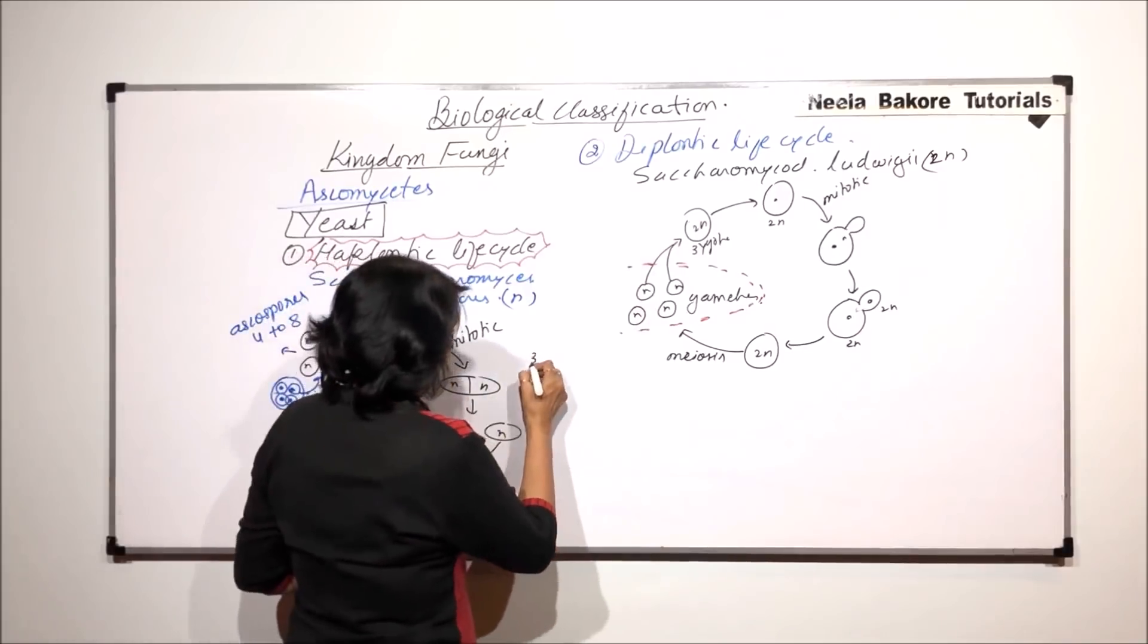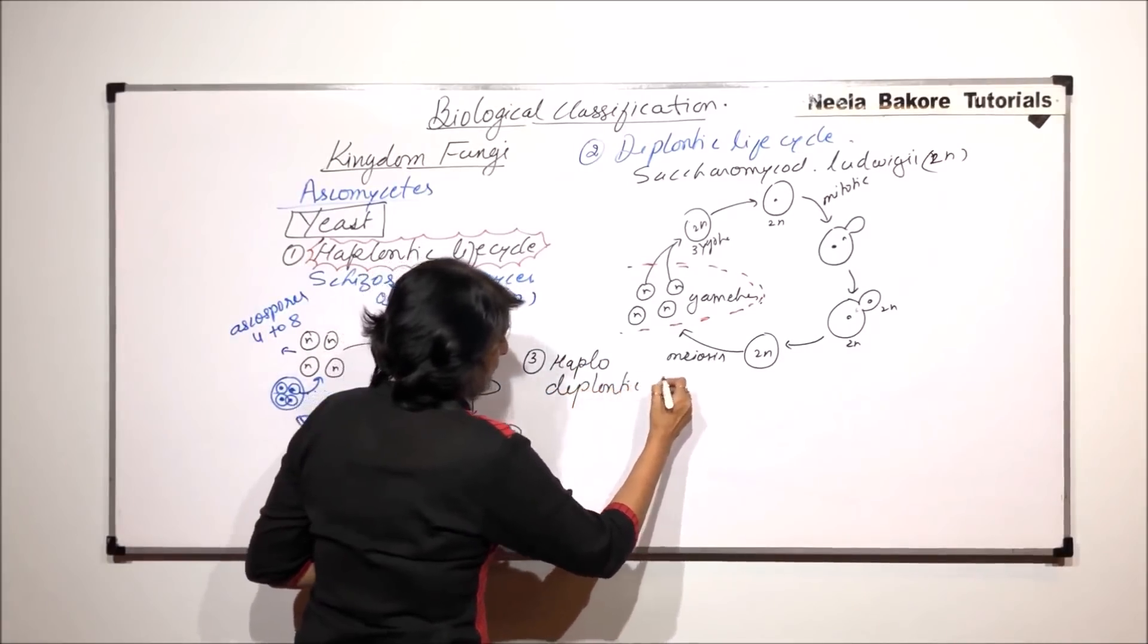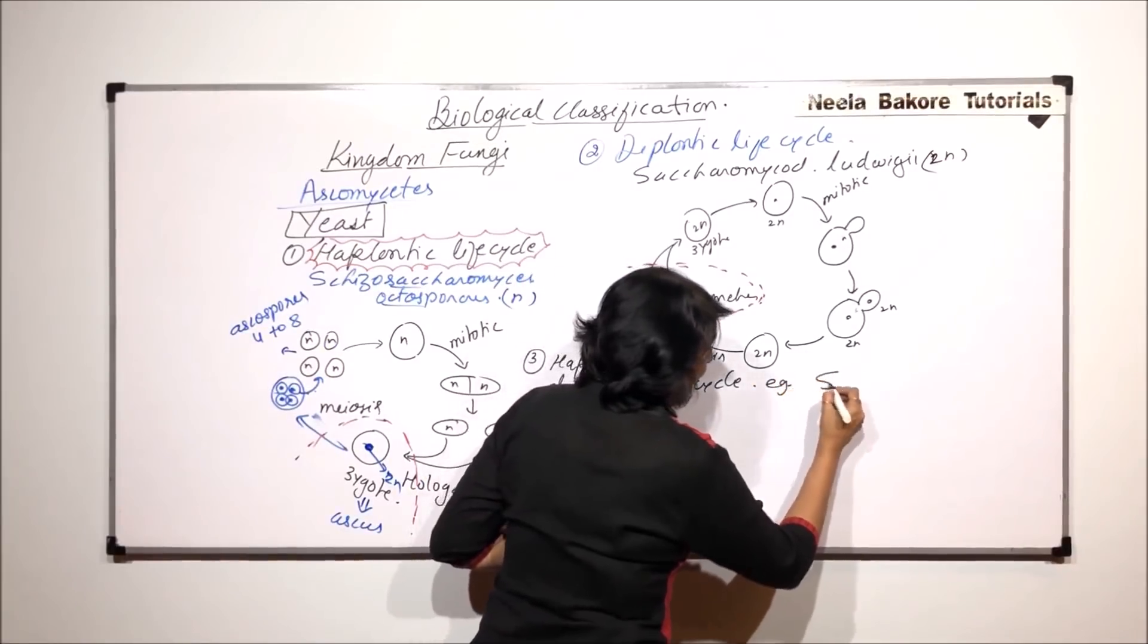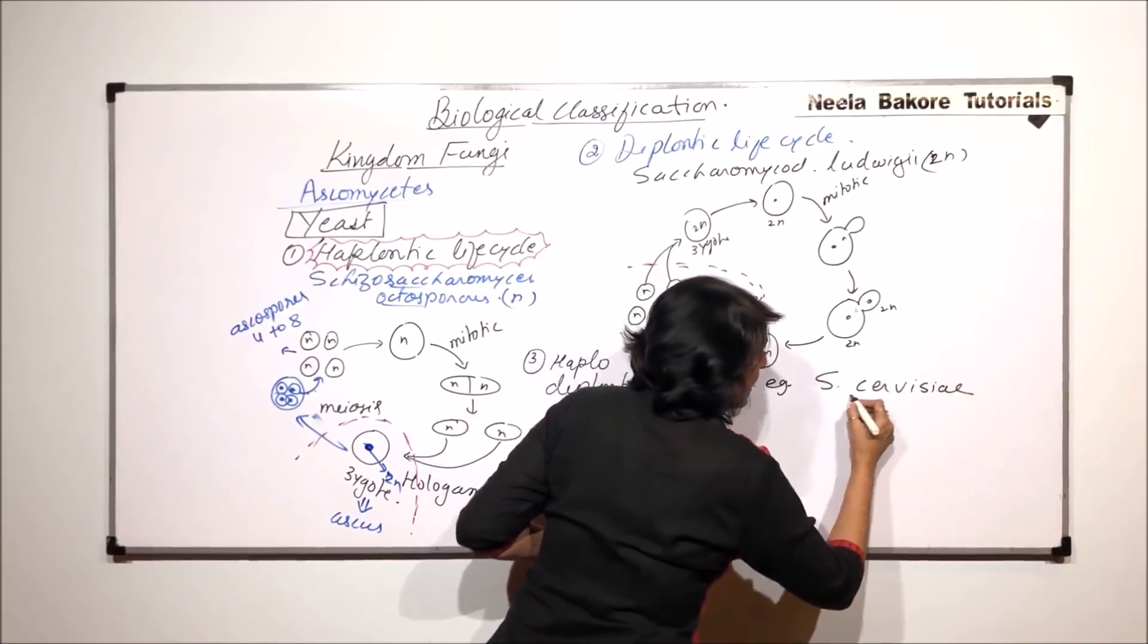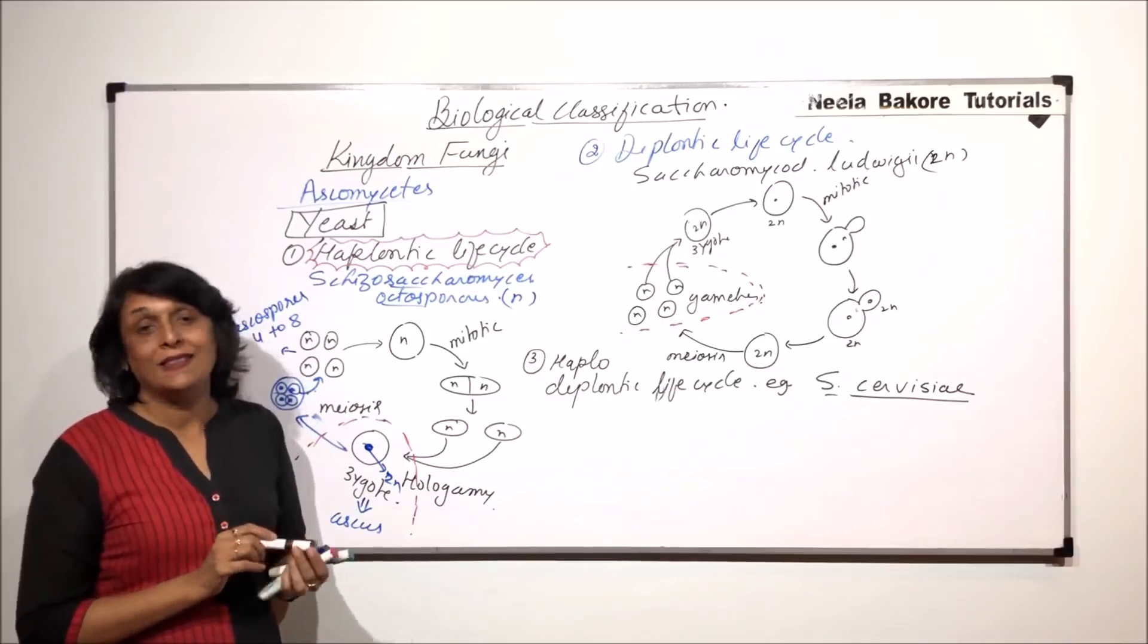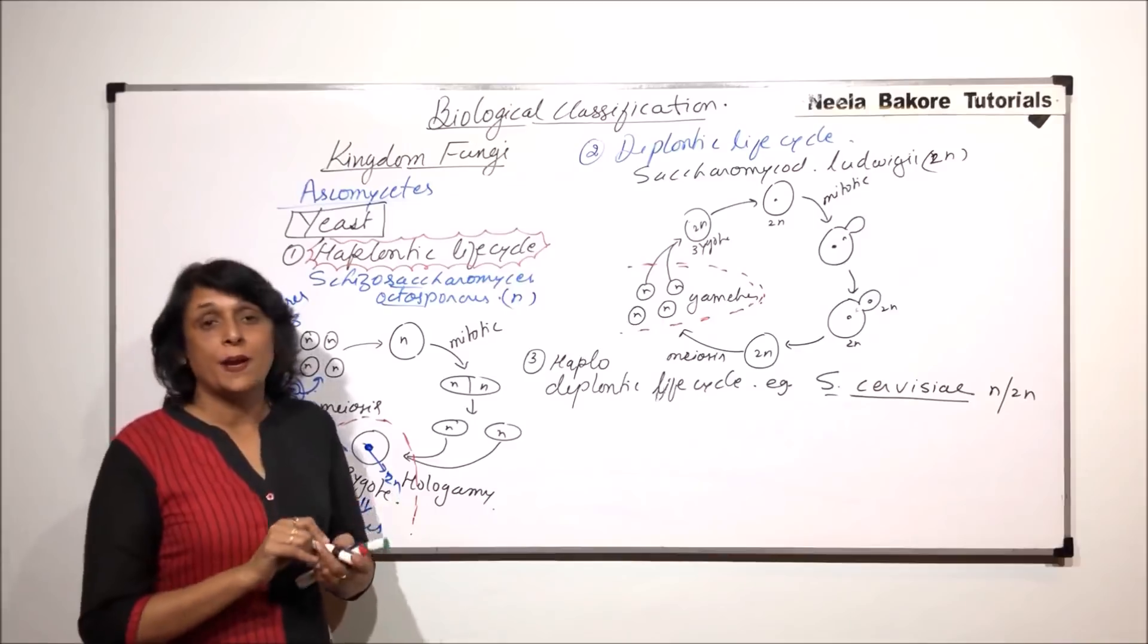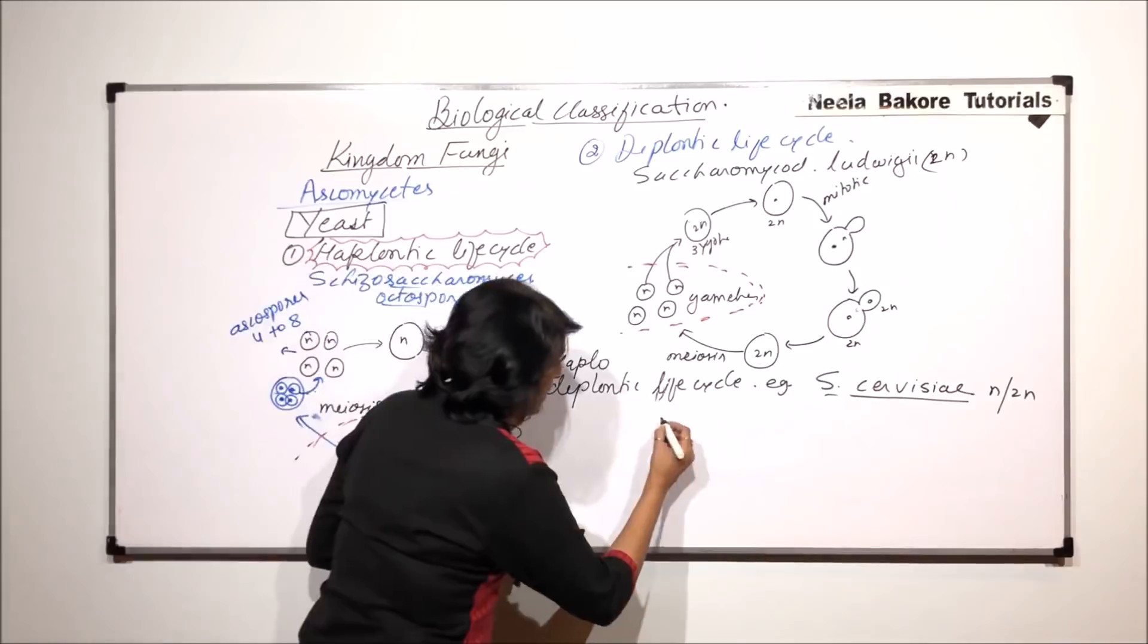Now the third one is called haplodiplontic life cycle. And this is seen in case of Saccharomyces cerevisiae. In Saccharomyces cerevisiae, this is the life cycle which you see. That means there are haploid cells as well as diploid cells. A major part is spent as haploid and equal part is spent as a diploid cell.